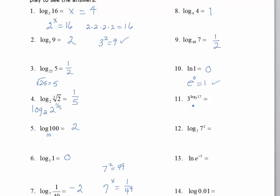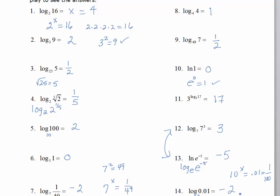Here is the special inverse property: when the base of the exponential and the base of the log are the same, the answer is the argument — so that's just 17. Similar property in log form: what exponent do I put on 7 to give me 7 cubed? That's 3. The ln of e to the negative 5 is the same as log base e of e to the negative 5, so the answer is negative 5. The last one: log of 0.01, which is 1/100 — I know 10 squared gives 100, so I want 10 to the negative 2.